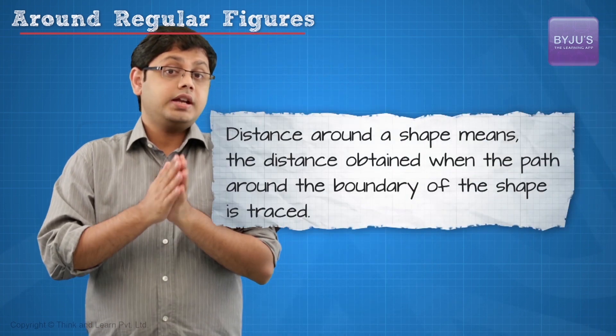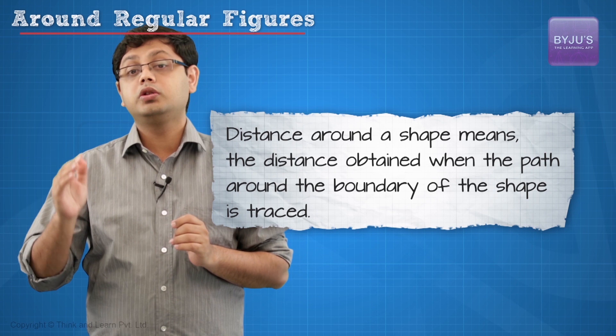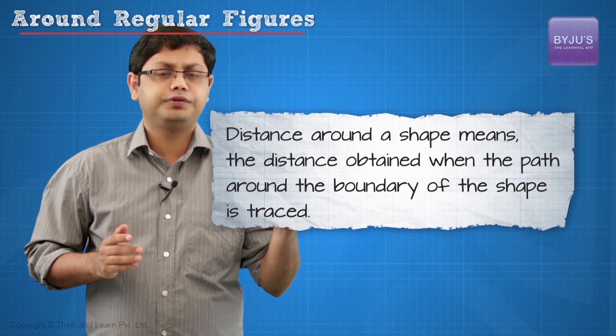But what exactly does distance around a shape mean? Well, that would be the distance you get if you trace the path exactly around the border or boundary of that shape.